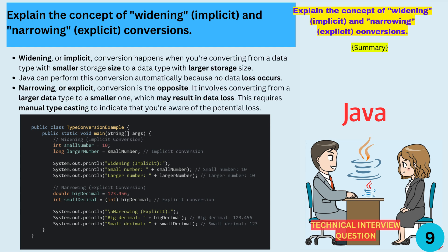Explain the concept of widening (implicit) and narrowing (explicit) conversions. Widening, or implicit, conversion happens when you're converting from a data type with smaller storage size to a data type with larger storage size. Java can perform this conversion automatically because no data loss occurs. Narrowing, or explicit, conversion is the opposite — it involves converting from a larger data type to a smaller one, which may result in data loss. This requires manual type casting to indicate that you're aware of the potential loss.